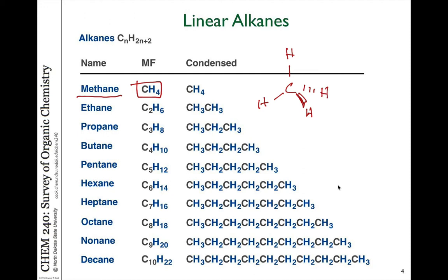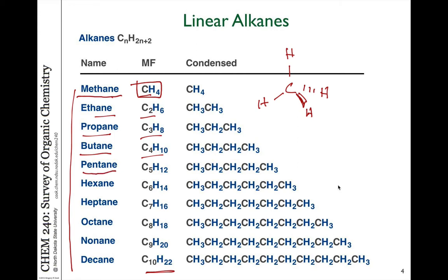One of the things we're going to be doing in this chapter is talking about nomenclature — how we name molecules. It's important to put these particular names into your head at this point. These are the first 10 alkanes: one carbon, two carbons, three carbons, four carbons, and so on until we get to C10. Their names are methane, ethane, propane, butane.